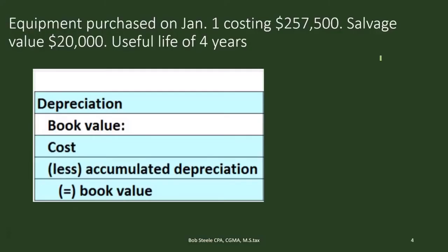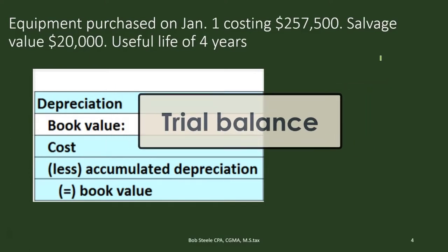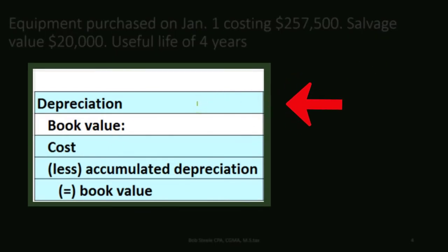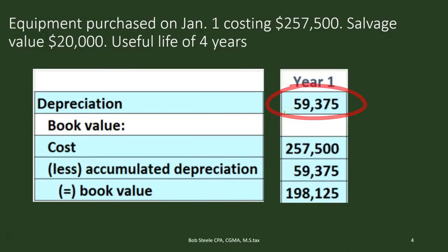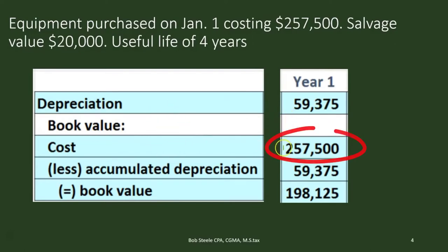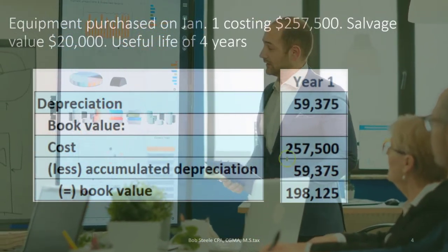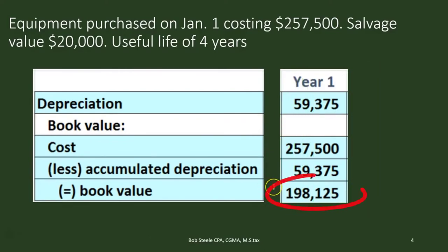Let's see what that looks like in a table. We know that depreciation is what we just calculated. The book value is going to be the cost less the accumulated depreciation. So the cost is $257,500 minus the accumulated depreciation — which represents the depreciation over the useful life of the asset up to this point — giving us the book value. In year one, the accumulated depreciation equals just that first year's $59,375.